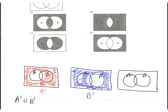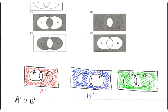A complement union B complement together means everything except the region inside A intersection B. The only part not included is inside both A and B.